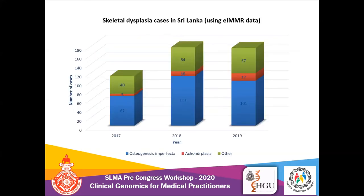We looked at the reported skeletal dysplasia cases in Sri Lanka using EIMMR data available in a given year. In a given year, more than half of the skeletal dysplasia reported are osteogenesis imperfecta cases, which is an interesting finding that we observed.